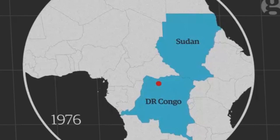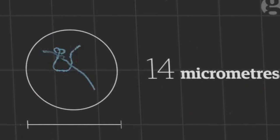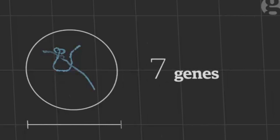The virus has an unusual shape — it's very long and thin compared to others. But despite the devastating impact of the virus, it's genetically very simple. Its single strand of RNA contains only seven genes.